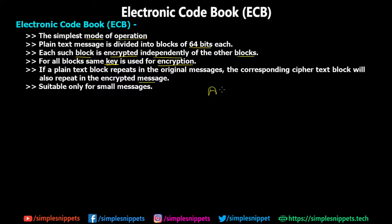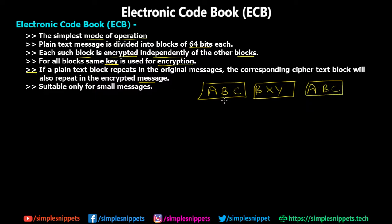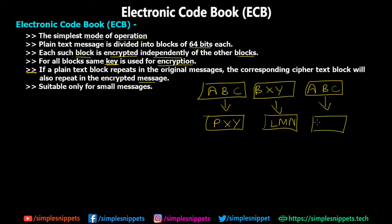For example, say we're encrypting three alphabets at a time. Block one is 'abc', block two is 'bxy', and block three is 'abc' again. If the cipher text for the first 'abc' block is 'pxy', then block two encrypts to 'lmn', and since 'abc' repeats in block three, its cipher text is also 'pxy'. This is the key weakness ECB has. It is suitable only for small messages and is not very secure compared to other encryption modes.